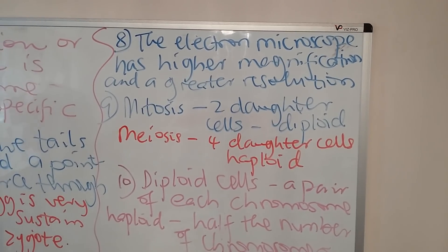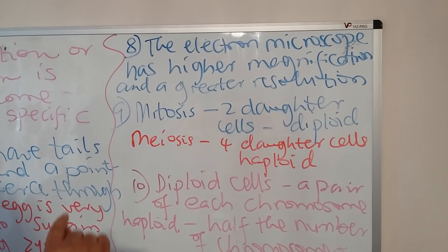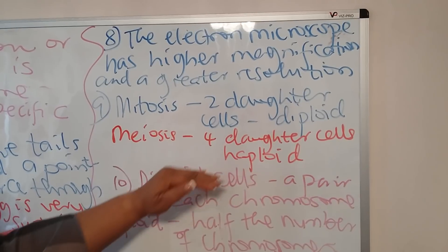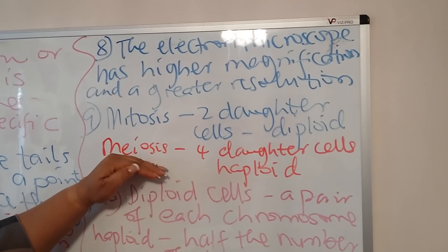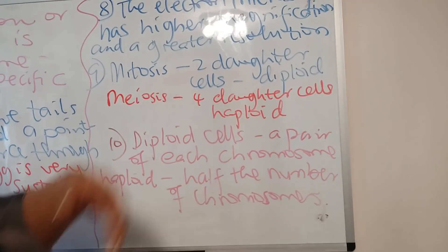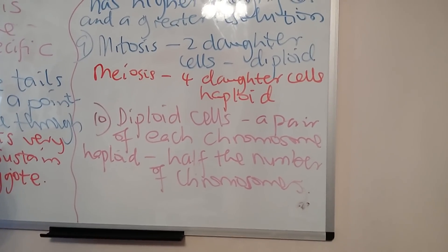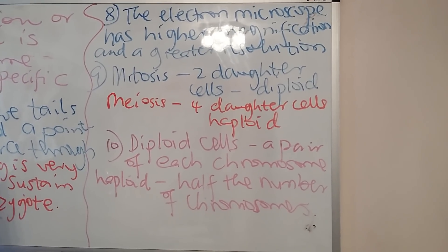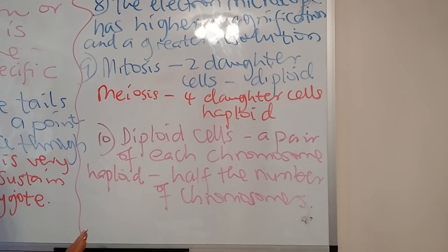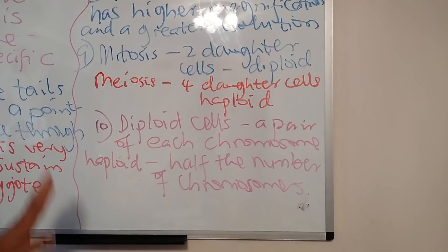Number nine: mitosis is different from meiosis in that two daughter cells are produced at the end of mitosis, which are diploid in nature. At the end of meiosis, four daughter cells are produced, which have half the number of chromosomes of the parent cell — and this is how you end up with gametes. Gametes are sex cells. In human cells, mitosis produces two daughter cells each with 46 chromosomes, while meiosis produces four daughter cells with 23 chromosomes each. Sometimes they could ask: after two stages of mitosis, how many cells are produced? The first division gives two cells, and the next step gives four cells.